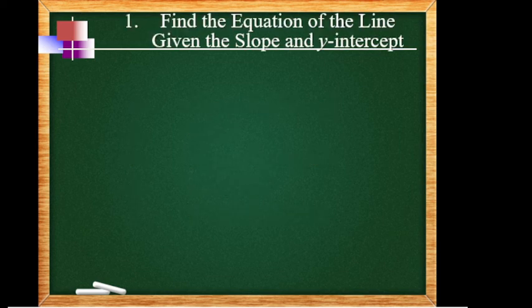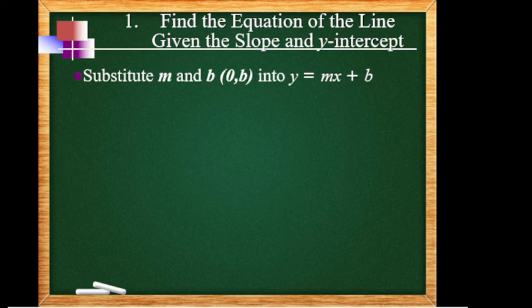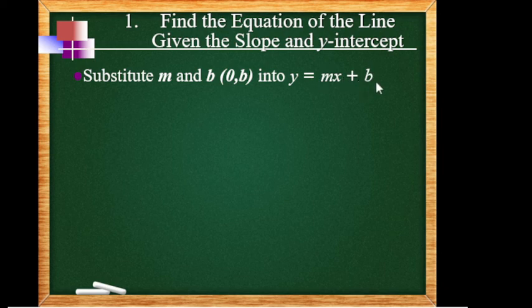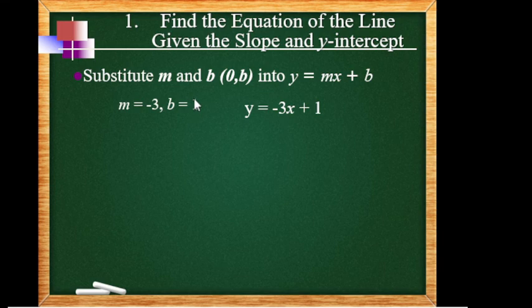Method 1: find the equations of the line given slope and y-intercept. Since we already know slope-intercept form, mas madali na ito. Substitute m and b into y = mx + b — just replace m and b with the given values. Sample: m = negative 3 and b = 1. So y = negative 3x plus 1 because we replaced m with negative 3 and b with positive 1. Number 2: m = negative 2 and b = negative 4. Substitute to get y = negative 2x minus 4. Bakit naging minus? Kasi ang b natin ay negative, that's why minus 4.